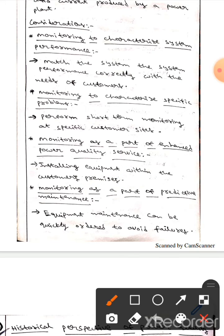The next one is monitoring as a part of predictive maintenance. Equipment maintenance can be quickly ordered to avoid failures like catastrophic failures.